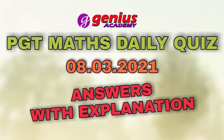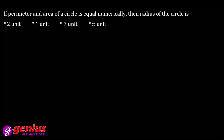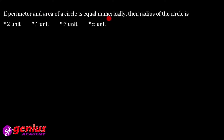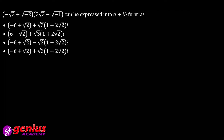Hello friends, welcome to Genius Academy. 8th March quiz ka solution. First question: if the perimeter and area of a circle are equal numerically, then the radius of the circle is what? Circumference is 2πr and area is πr². If they are equal, cancel out r from r, so the radius will be 2 units.